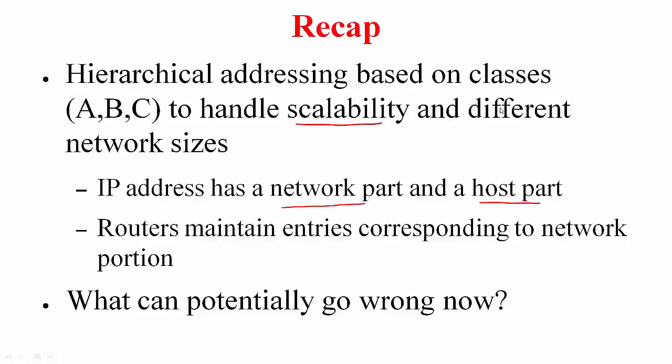We also saw this addressing was divided into classes A, B, C, D, E, but D and E are special addresses. So A, B, C is what is relevant and this was done to handle different network sizes. So this should take care of things. What can potentially go wrong?